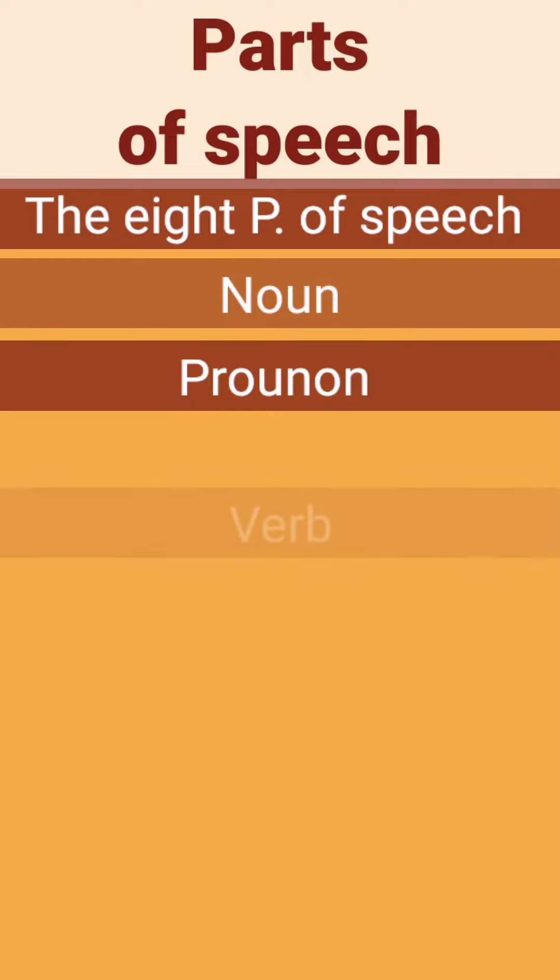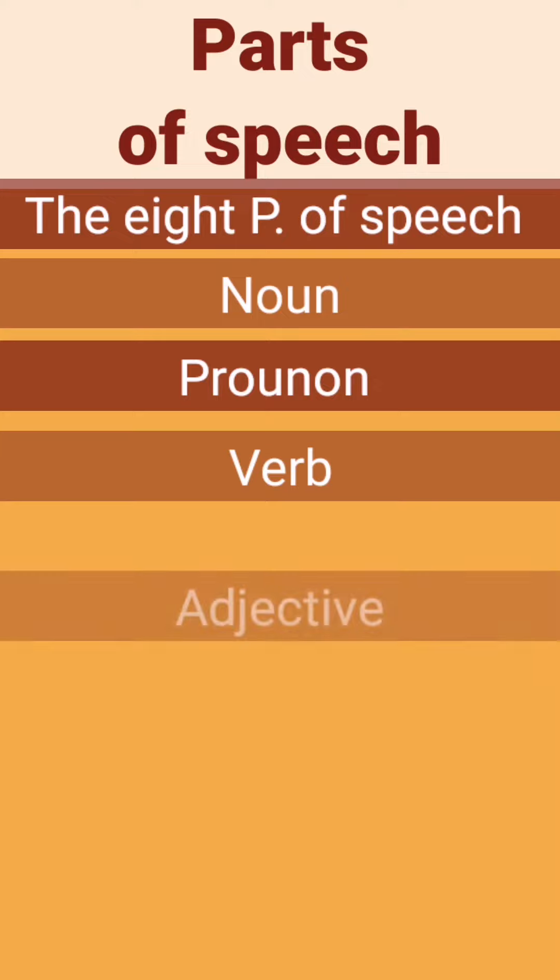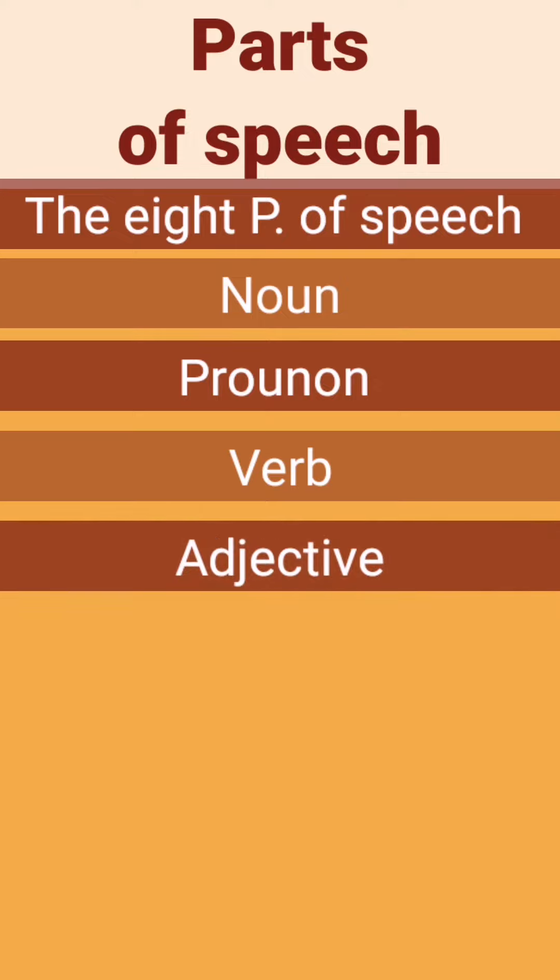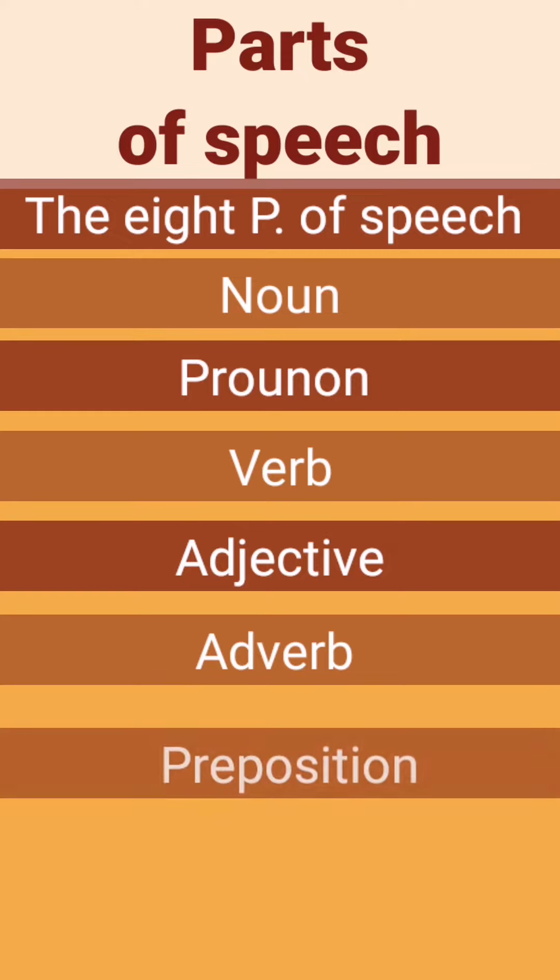Verb expresses action or being. Adjective modifies or describes a noun or pronoun. Adverb modifies or describes a verb, an adjective, or another adverb. Preposition is a word placed before a noun or pronoun to form a phrase modifying another word in the sentence.